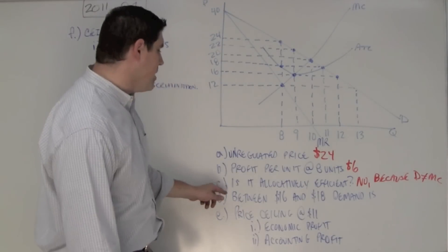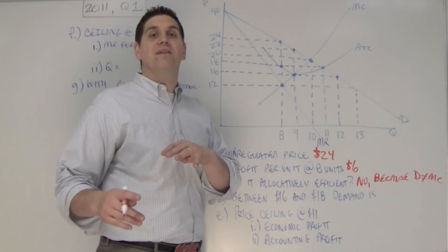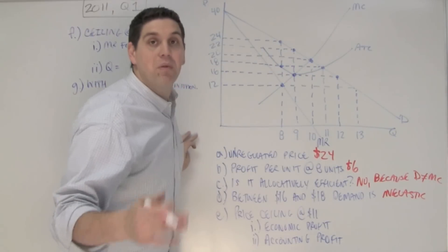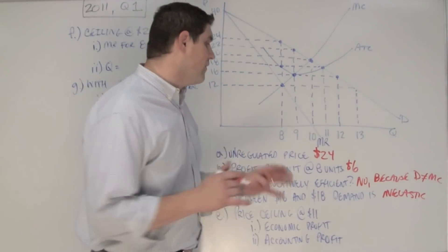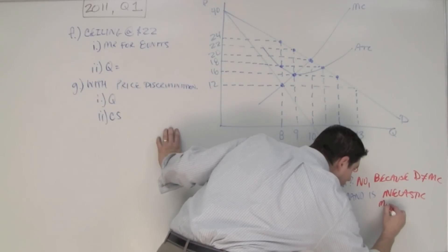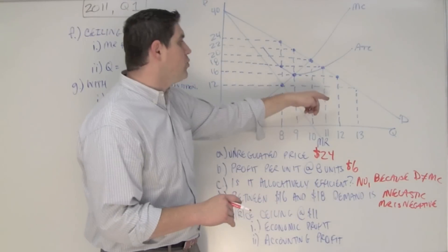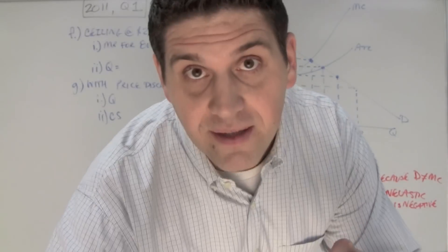Next question says, between prices $16 and $18, is demand elastic, inelastic, or unit elastic? The right answer is, it is inelastic. But again, it's an explain question, so you have to explain how you got the answer inelastic. You could have said one of two things. One, because the MR is negative. You could have also said because the price went down, the total revenue went down. Because the total revenue test, that makes that inelastic.